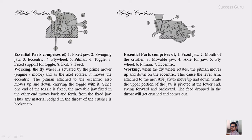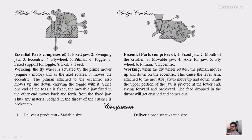Now the comparison between the Blake crusher and the Dodge crusher. The first point is discharge size: the Dodge crusher delivers a uniform size because the exit gap at the bottom is fixed — only particles smaller than this gap can exit — so all discharged material is the same size. In the Blake crusher, the movable jaw swings front and back at the bottom, so a variable size of material can exit, giving a variable discharge size.